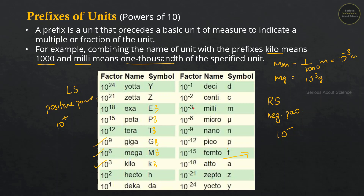For negative powers of 10: 10 raised to minus 1 is deci, 10 raised to minus 2 is centi, 10 raised to minus 3 is milli, 10 raised to minus 6 is micro, and 10 raised to minus 9 is nano. Nanotechnology operates at the nanometer scale, which is 10 raised to minus 9 meters.